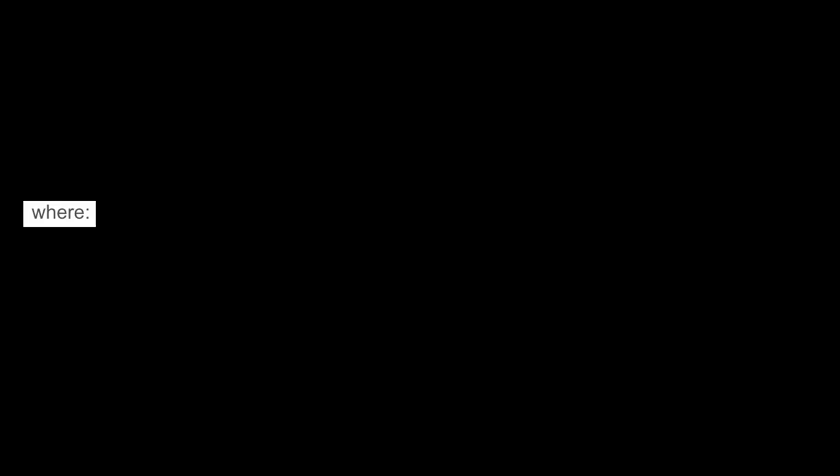It is calculated considering the length of the swimmer, the oscillation frequency, the Young's modulus and the second moment inertia of the tail, and the viscous resistant coefficient. A sperm number of order one leads to optimal conditions for forward propulsion.